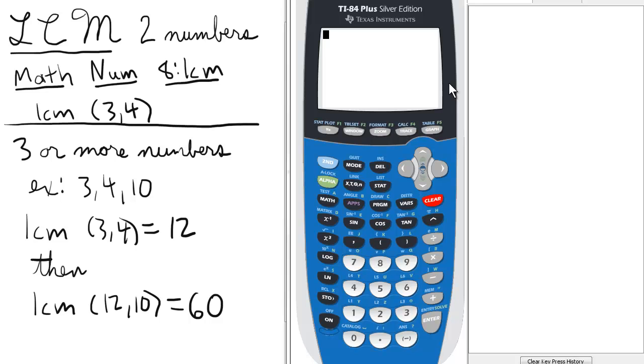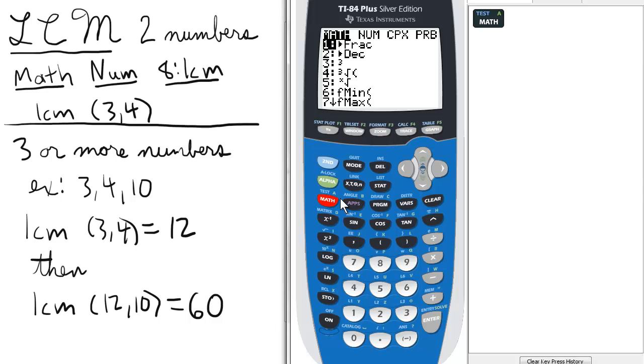To find the least common multiple of two numbers, we want to press Math to select the Math menu. From there, we scroll over to Num for numbers, and we select 8 for LCM.